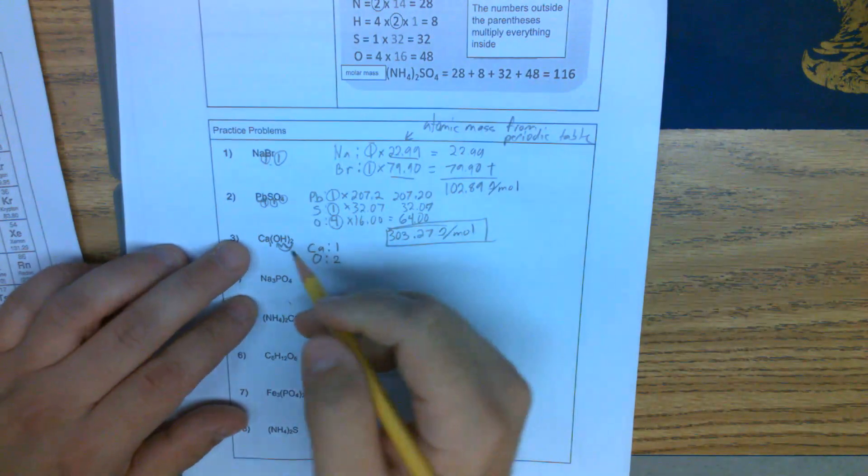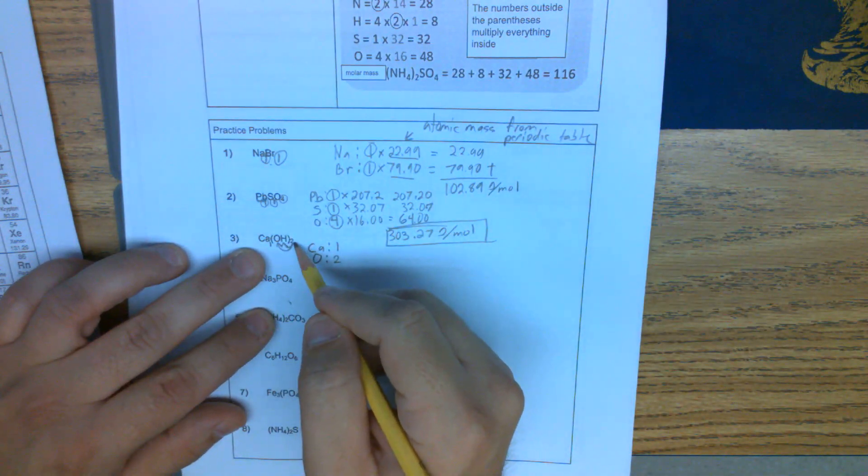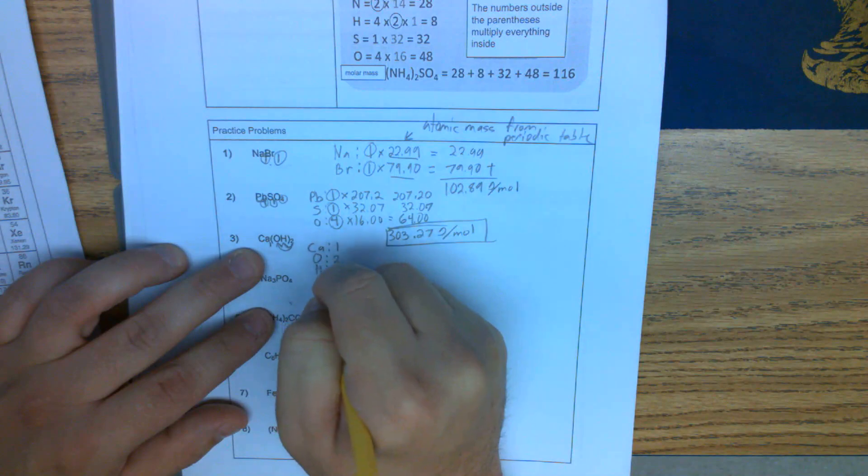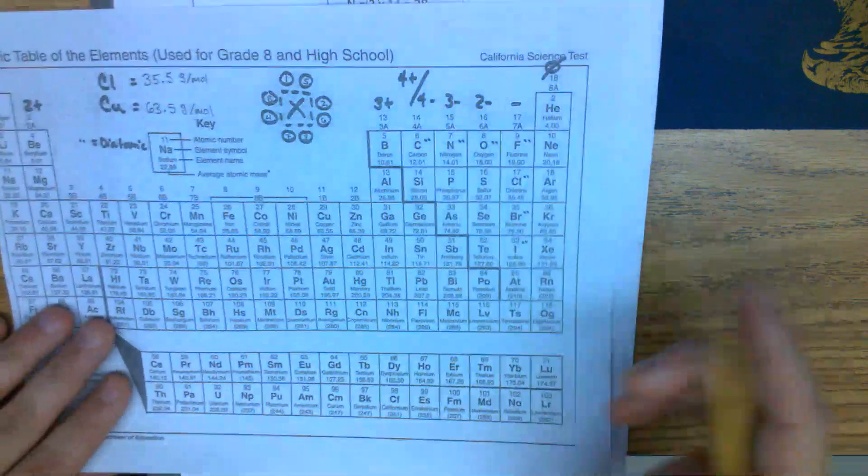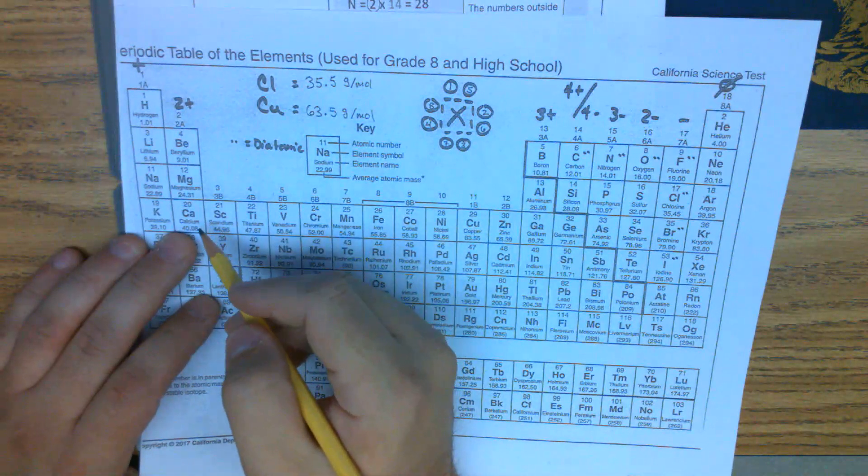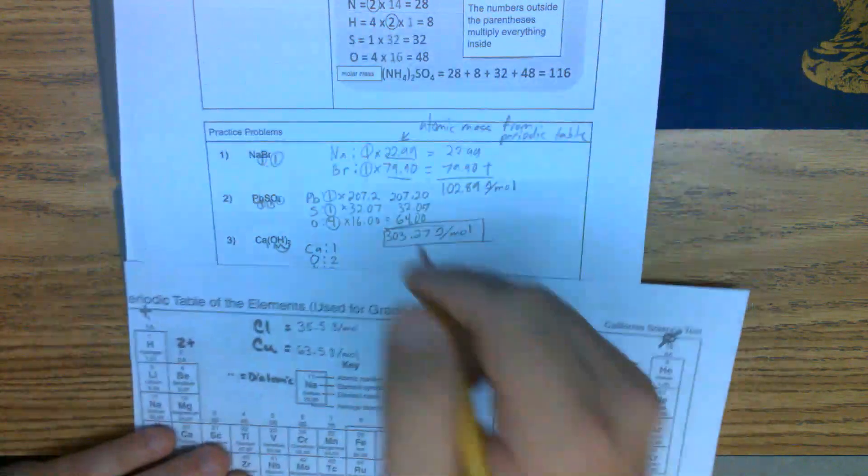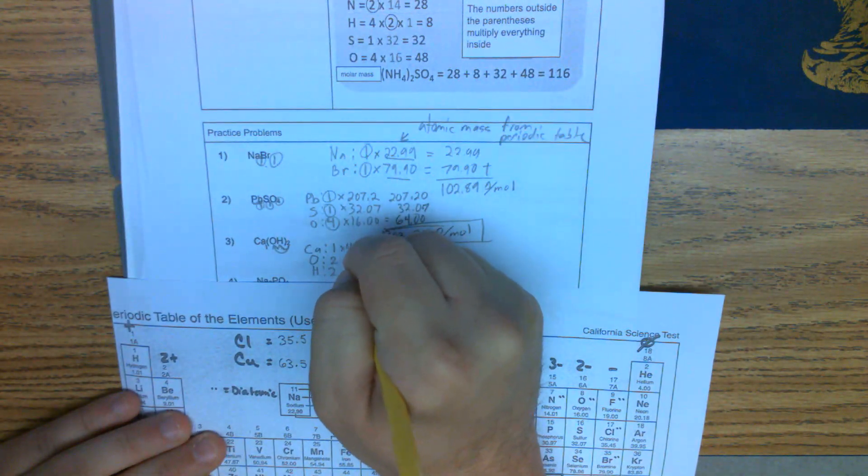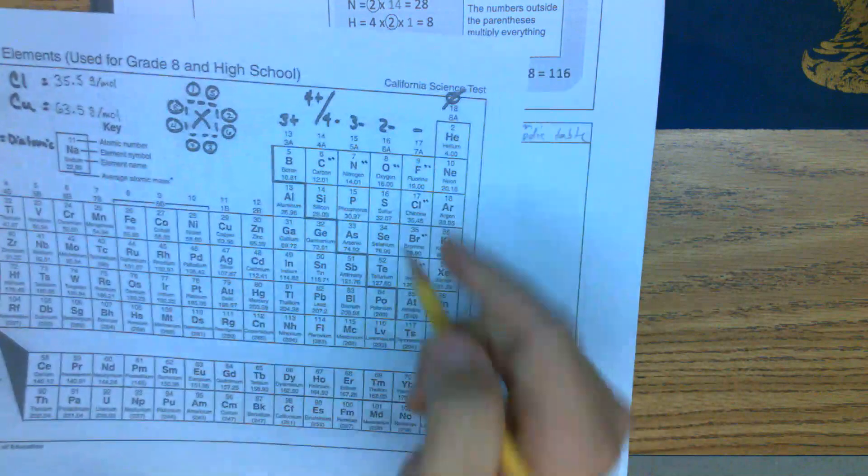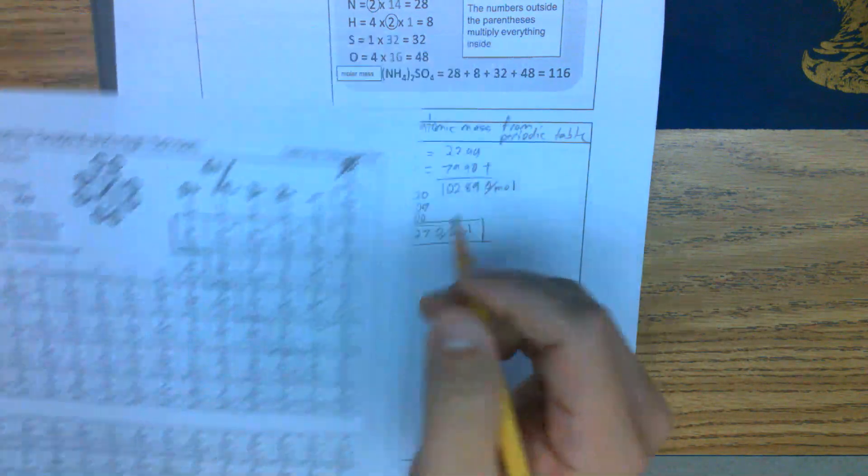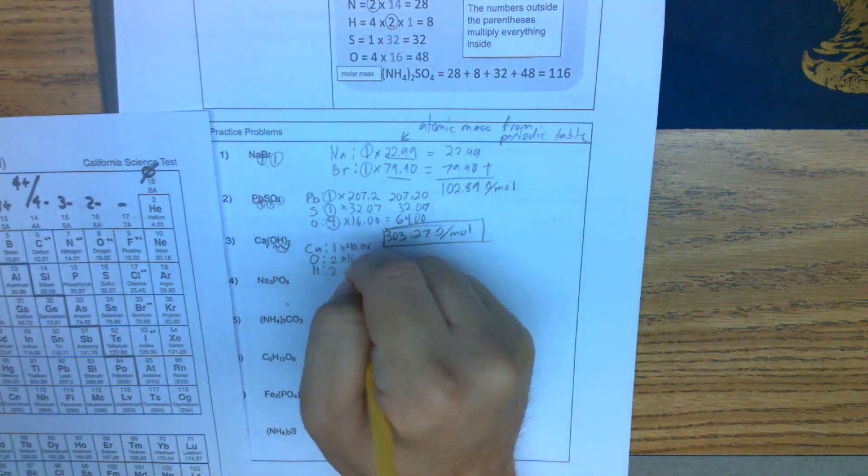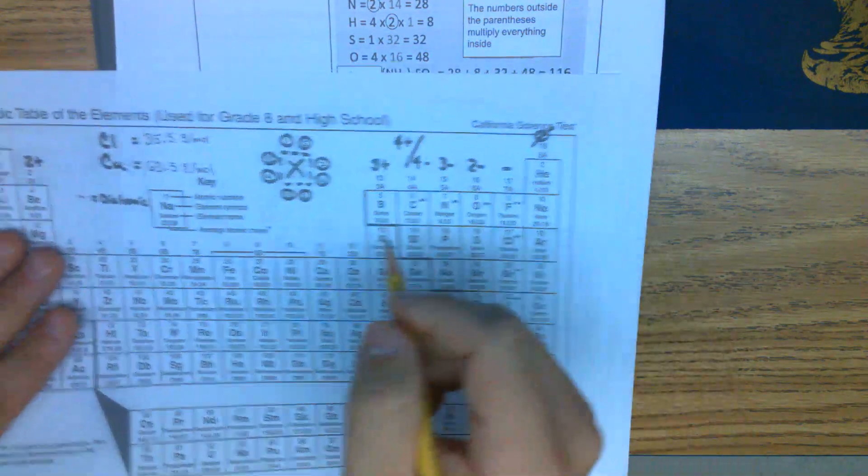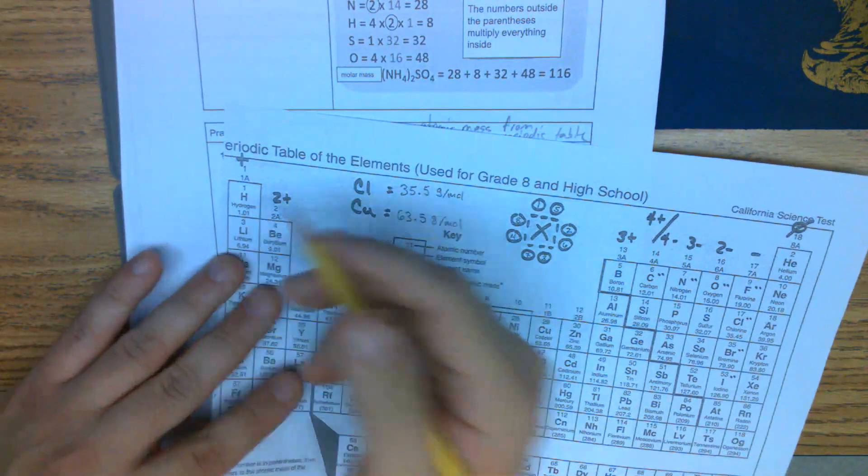So if we look at this, for H we have two H's. Then we're going to look at our periodic table. Calcium is 40.08, oxygen is 16.00, and hydrogen is 1.01.